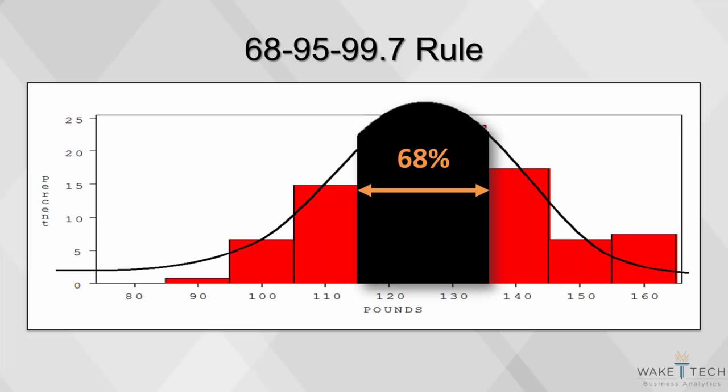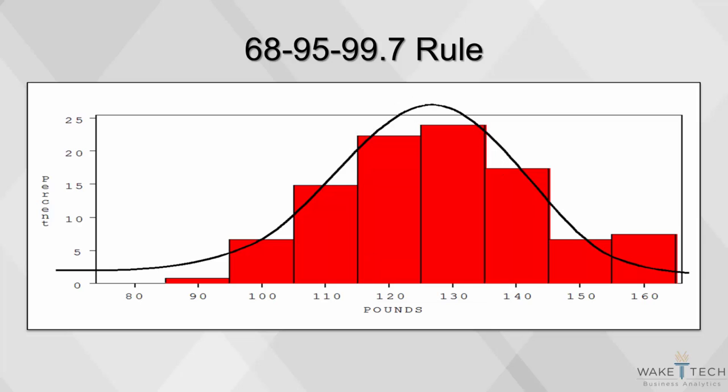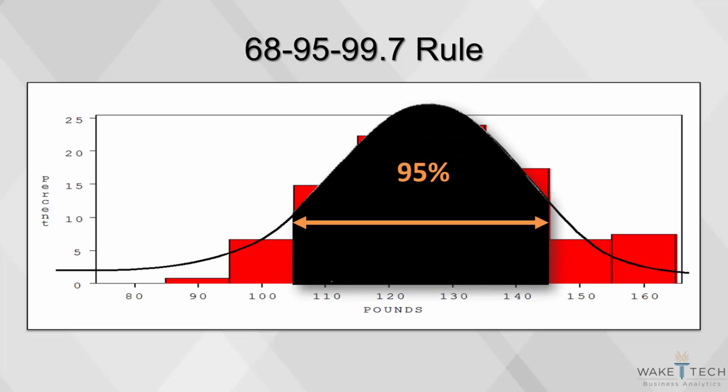When we check our data, we see that 79 runners fall within one standard deviation of the mean. Furthermore, 95% of our group, or about 114 runners, should fall within two standard deviations of the mean, or between 96.8 and 158.8 pounds. The data shows that 115 runners fall within two standard deviations of the mean.